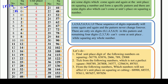2 squared is 4, 3 squared is 9, 4 squared is 16, 5 squared is 25, 6 squared is 36, 7 squared is 49, 8 squared is 64, 9 squared is 81, 10 squared is 100, 11 squared is 121, 12 squared is 144, 13 squared is 169, 14 squared is 196, 15 squared is 225, 16 squared is 256, 17 squared is 289, 18 squared is 324, 19 squared is 361, and 20 squared is 400, and so on up to 40.